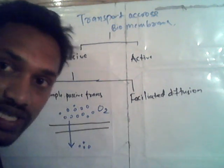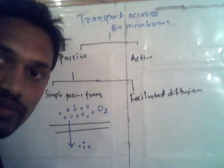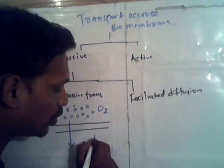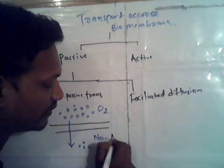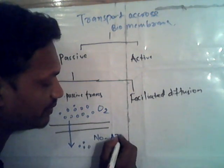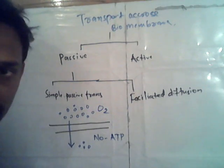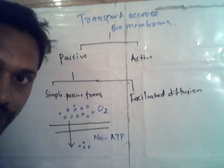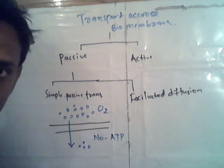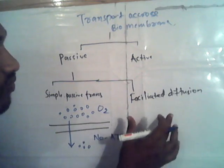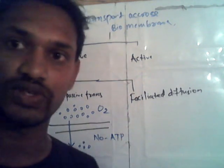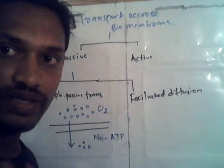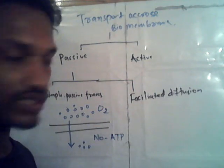One vital thing is that in simple diffusion there is no requirement of ATP — adenosine triphosphate is not needed here. In this case, in facilitated diffusion also, ATP energy is not used. In any passive transport, energy is not required.